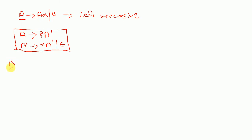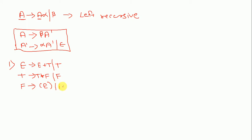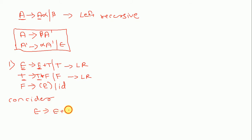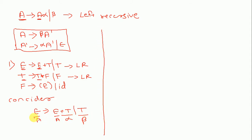Let's have an example. E gives E plus T slash T; T gives T star F slash F; F gives opening bracket E closing bracket slash id. As we see, this production contains left recursion — E and E are the same here, T and T are the same here. So we have to remove this. Consider E gives E plus T slash T.